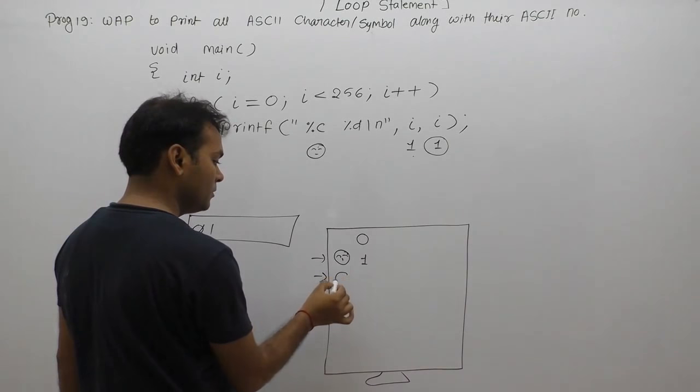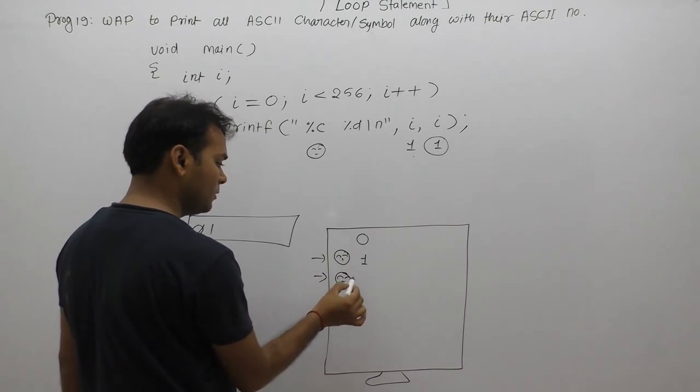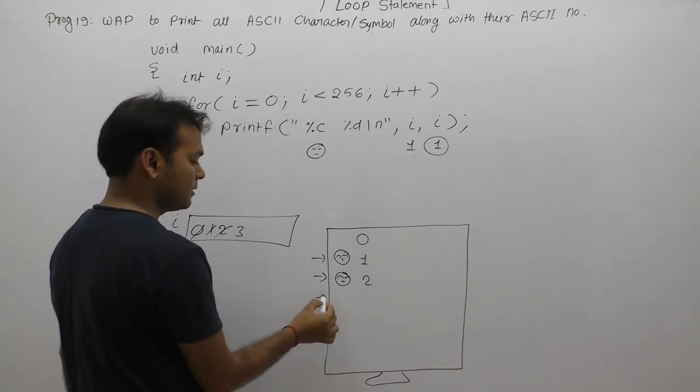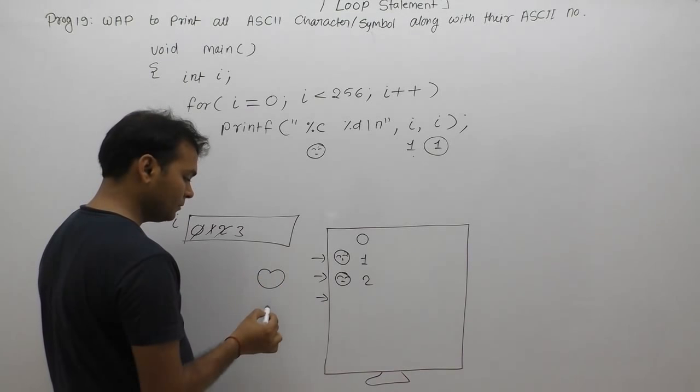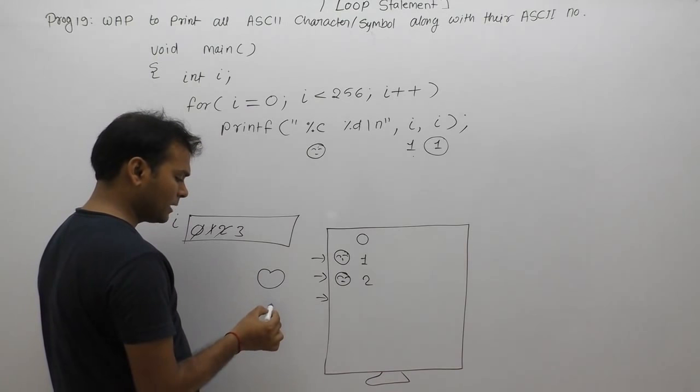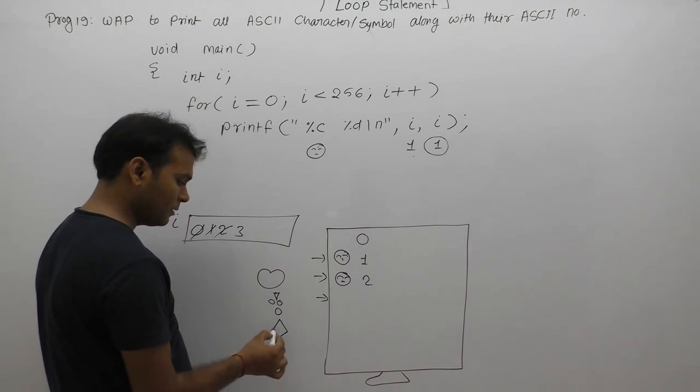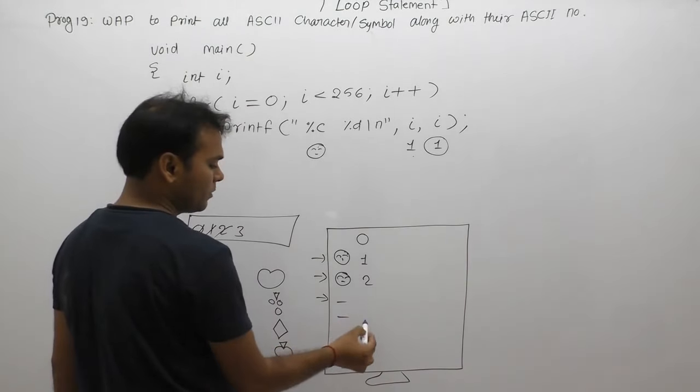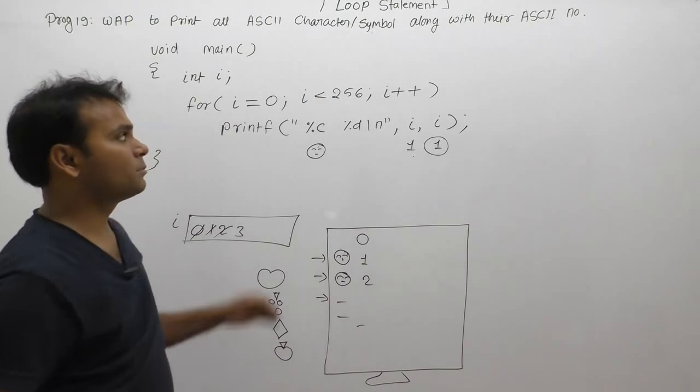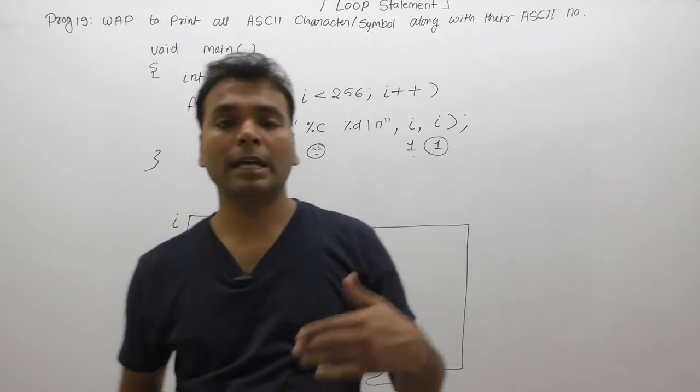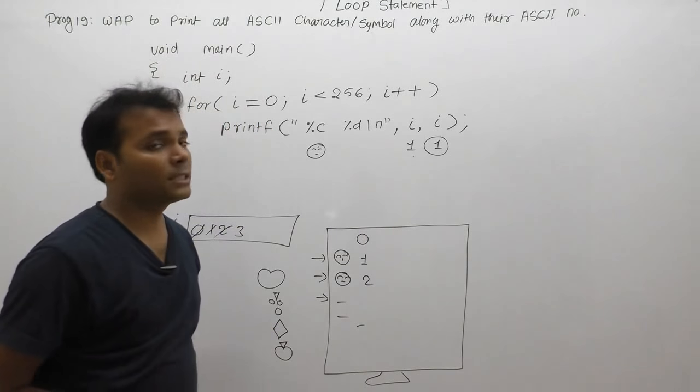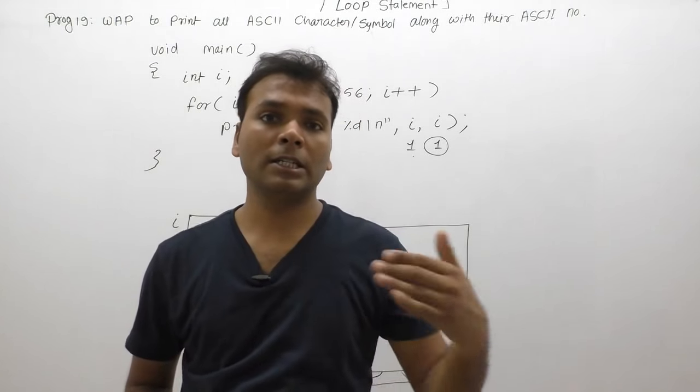Next time i's value after 2 will be 3, then displays some hearts or symbols of cards, like club, whatever symbols of the cards. Remaining symbols print up to 255. This is the output of this program. Using this logic, all symbols available in C language can be displayed. Next program we'll discuss: how to display the ASCII value of every alphabet or digit.